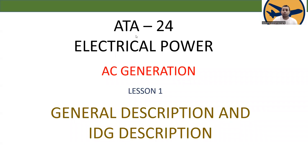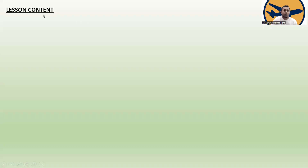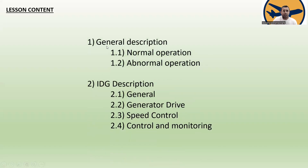Today's lesson is ATA Chapter 24 Electrical Power, AC Generation, Lesson Number One: General Description and IDG Description. The lesson has two chapters. The first is general description, covering normal and abnormal operation. The second is IDG description, covering general, generator drive, speed control, and control and monitoring.